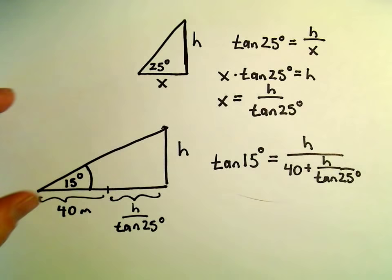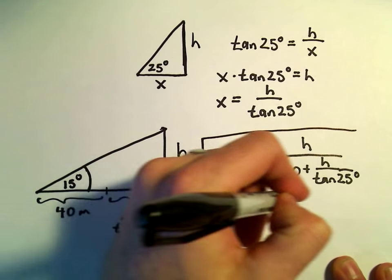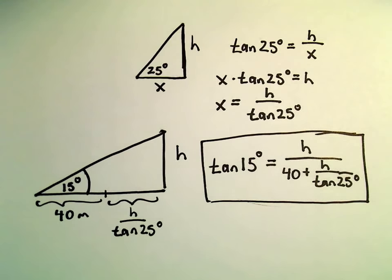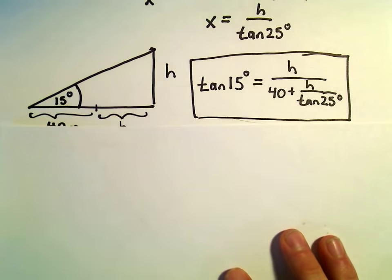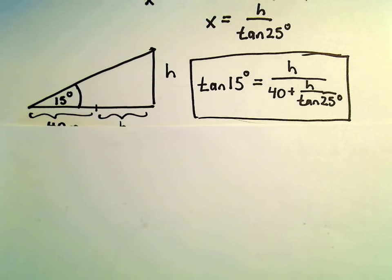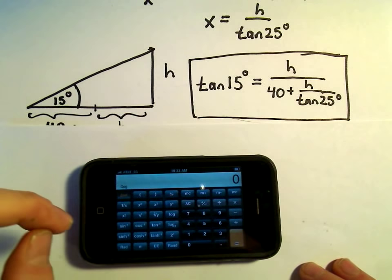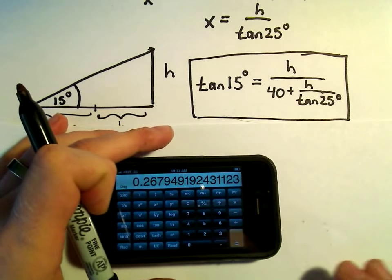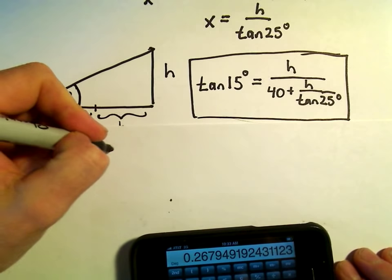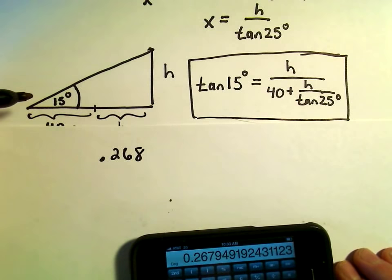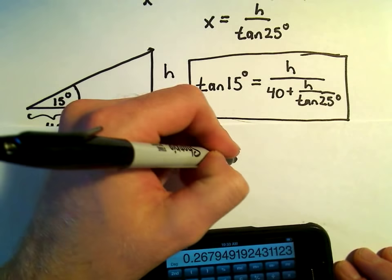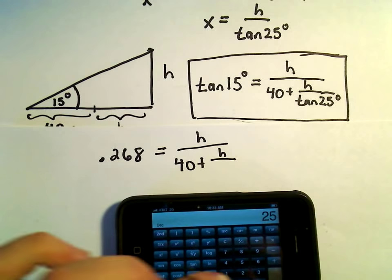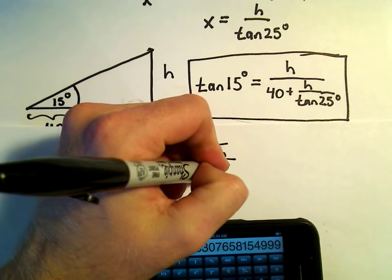So at this point, a little bit of algebra. Now we have to just solve this equation. Alright, so what I'm going to do is I think I'm going to start turning everything into decimals. Just to start approximating things, I think it'll make things a little bit easier to deal with. So let's see, I'm going to do tangent of 15 degrees. Tangent of 15 degrees is roughly going to be 0.268. Then we have h over 40 plus h over tangent of 25 degrees. So let's do tangent of that. I'm getting 0.466.